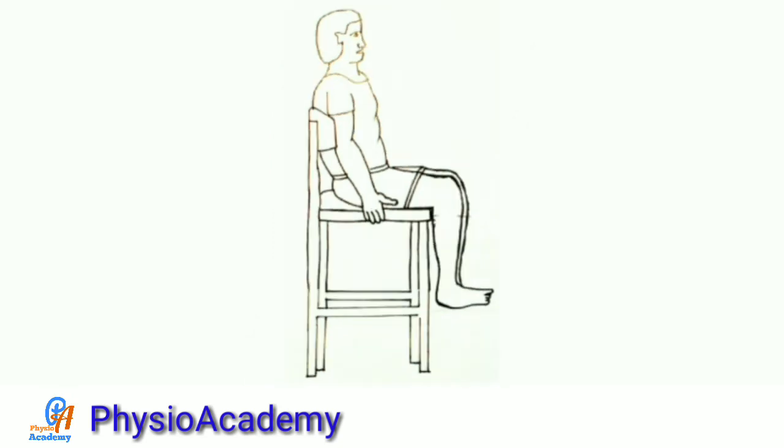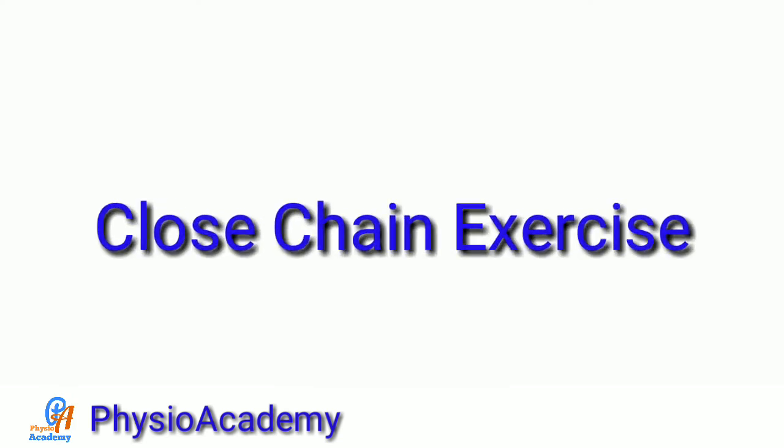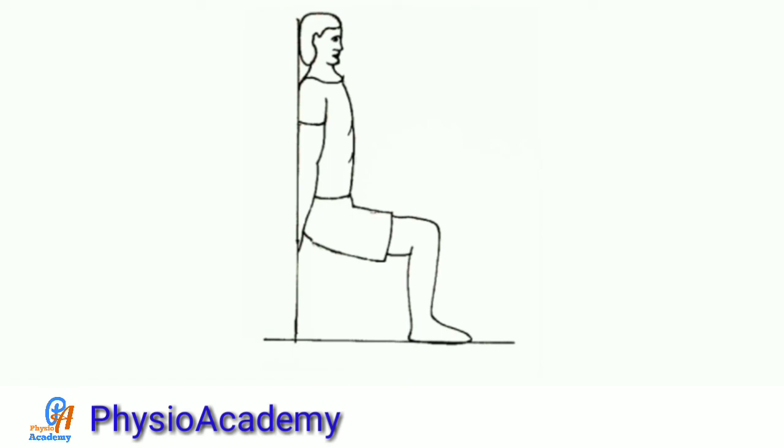In closed chain exercises, first one is squatting. Ask the patient to stand with wall support with legs apart, then the patient bends his hip and knees. At that time, the back of the patient is supported with the wall and gets back to normal position.